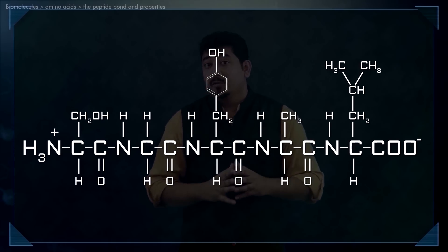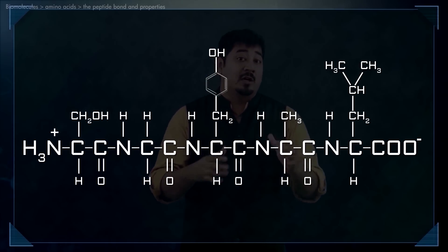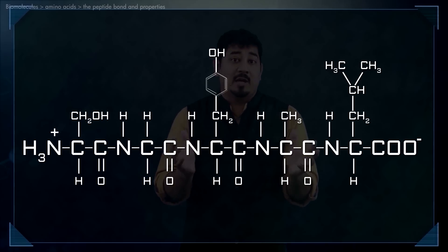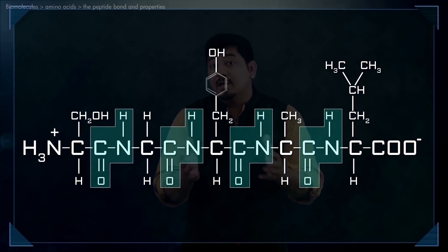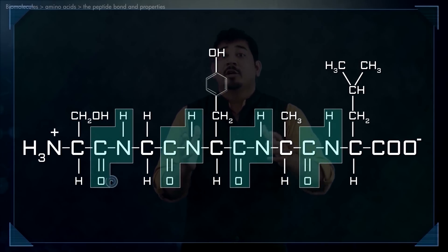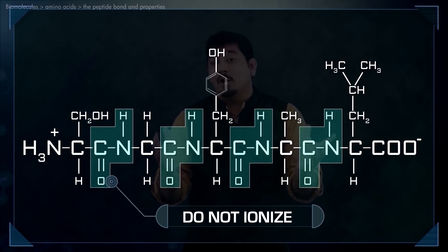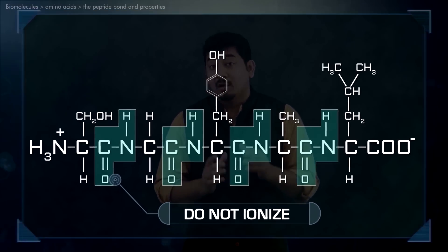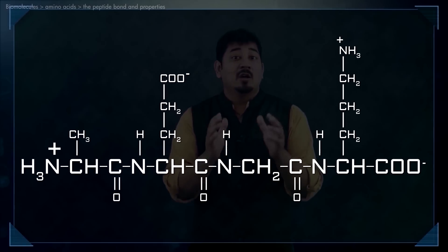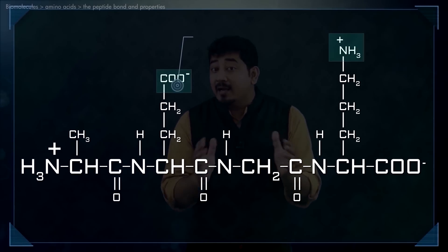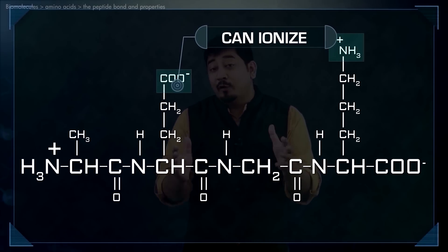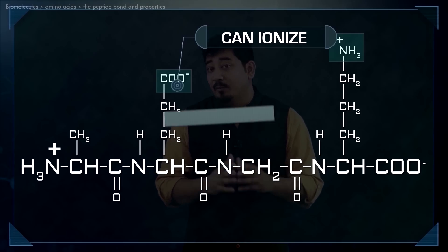The alpha-amino and alpha-carboxyl groups of all non-terminal amino acids are covalently joined in the peptide bonds. Therefore, they do not ionize and do not contribute to the total acid-base behavior of peptides. However, the R-groups or side chains of some amino acids can ionize, and in a peptide, these would contribute to the overall acid-base properties of the molecule.